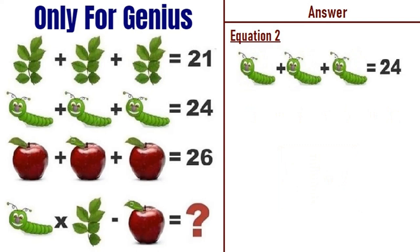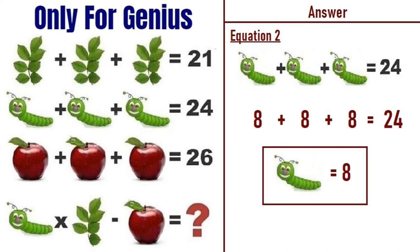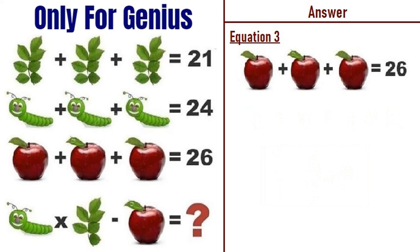Moving on to equation number two: caterpillar plus caterpillar plus caterpillar equals 24. Eight plus eight plus eight equals 24, so caterpillar equals 8.